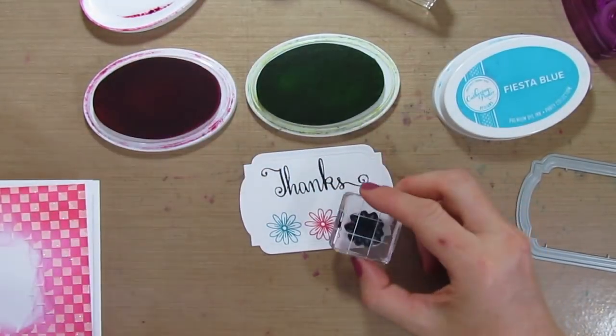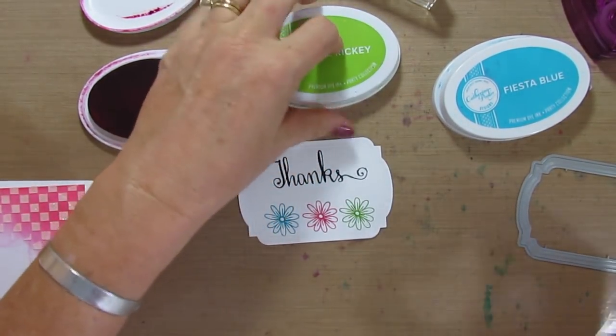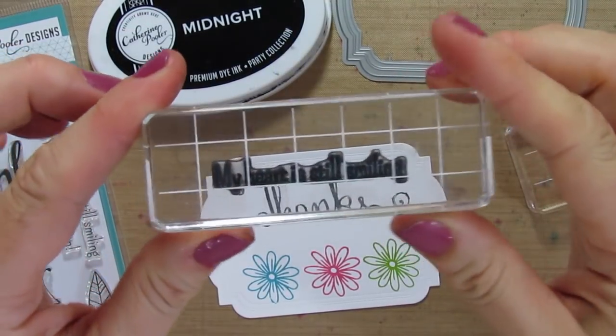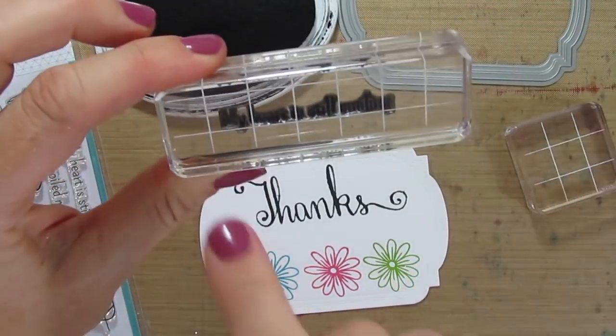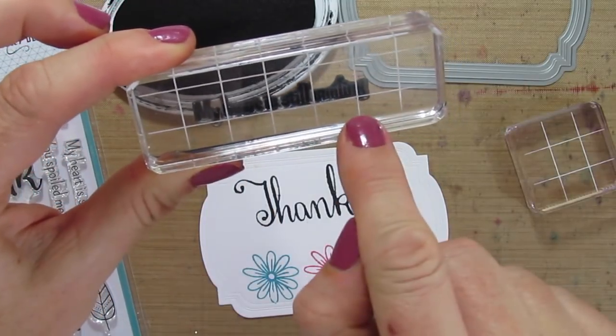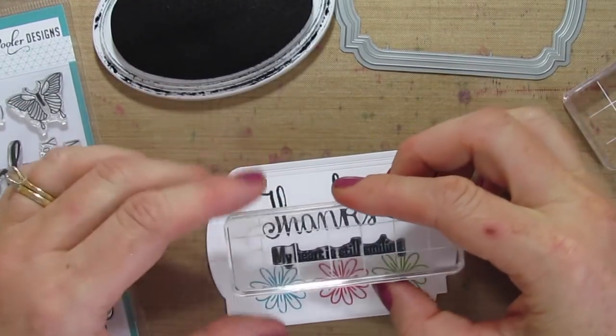And then I have just a little bit of space there in between the flowers and the thanks to do one of those fun greetings. So I've chosen 'my heart is still smiling.' I can use that for all sorts of different occasions, and I just lined up the bottom of the sentiment with my grid line, and that will help me line it up on the label.